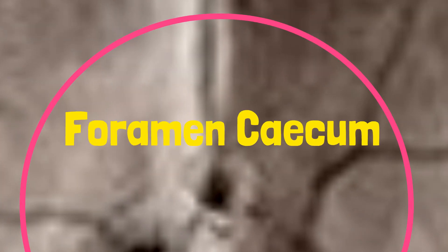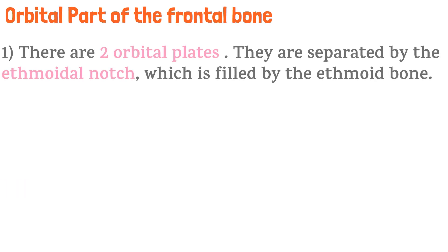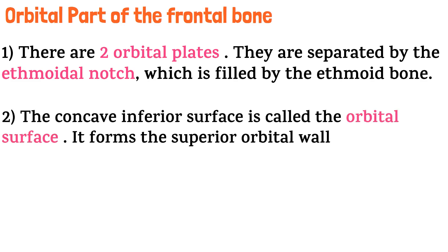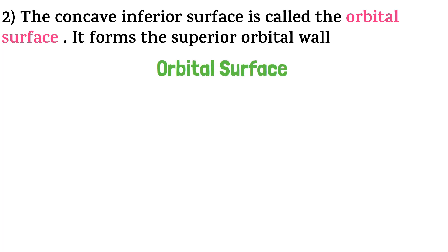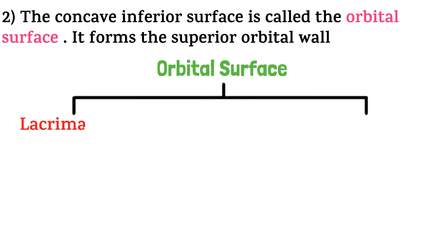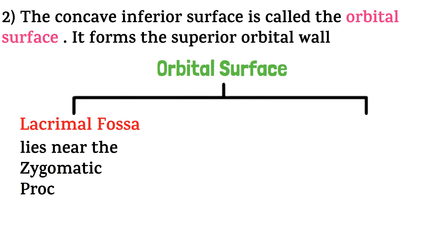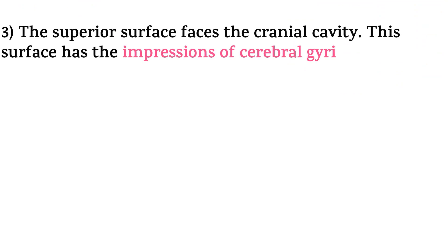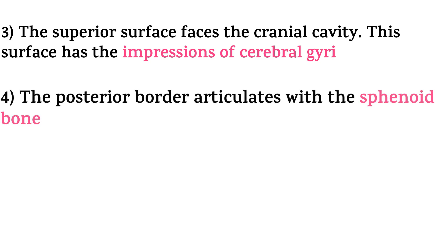With this, we complete the first part of the frontal bone and move on to the next part, which is the orbital part. The orbital part contains two orbital plates, separated by the ethmoidal notch, which is filled by the ethmoid bone. The concave inferior surface is called the orbital surface, and it forms the superior orbital wall. The orbital surface has the lacrimal fossa, which lies near the zygomatic process, and the trochlear fovea and spine, which lies near the frontal notch. The superior surface faces the cranial cavity and has the impression of cerebral gyri. Lastly, the posterior border articulates with the sphenoid bone.